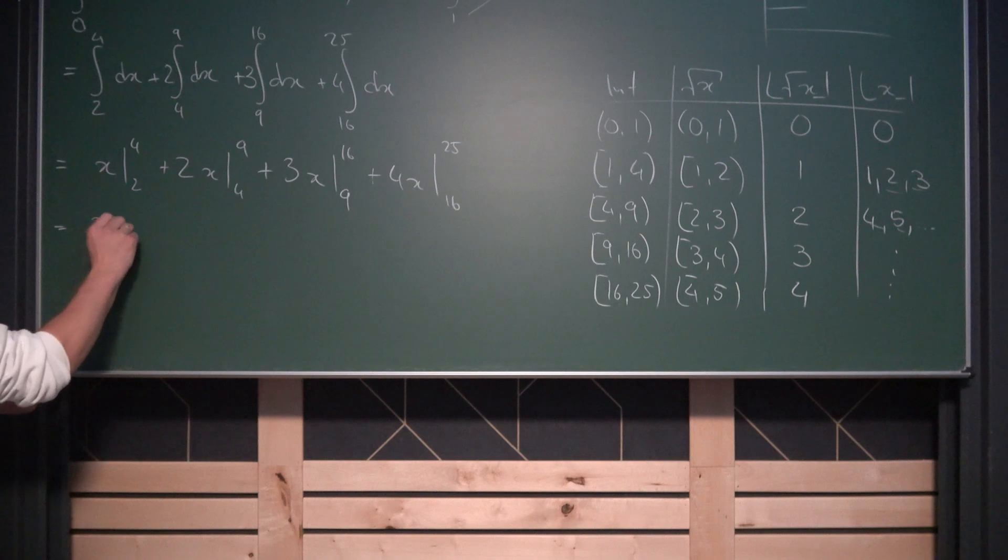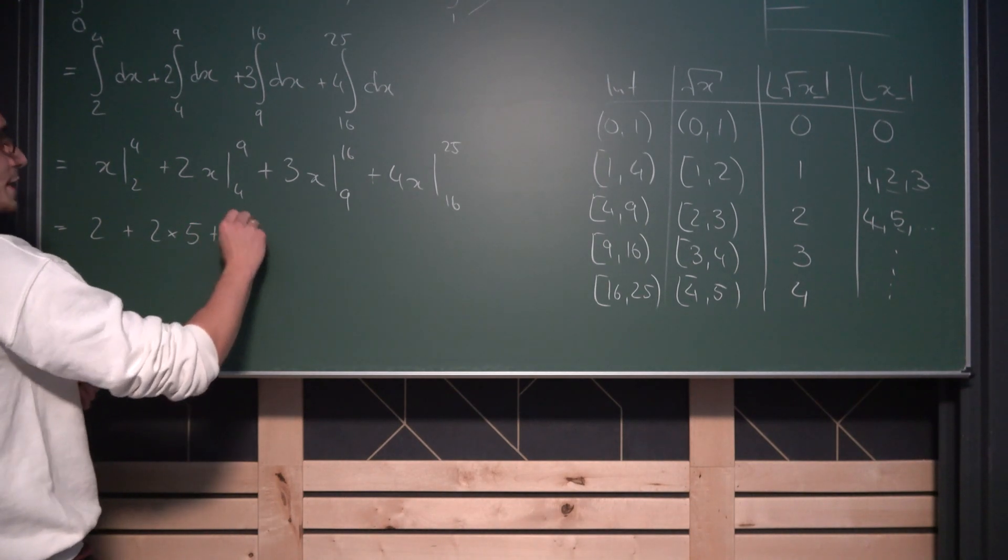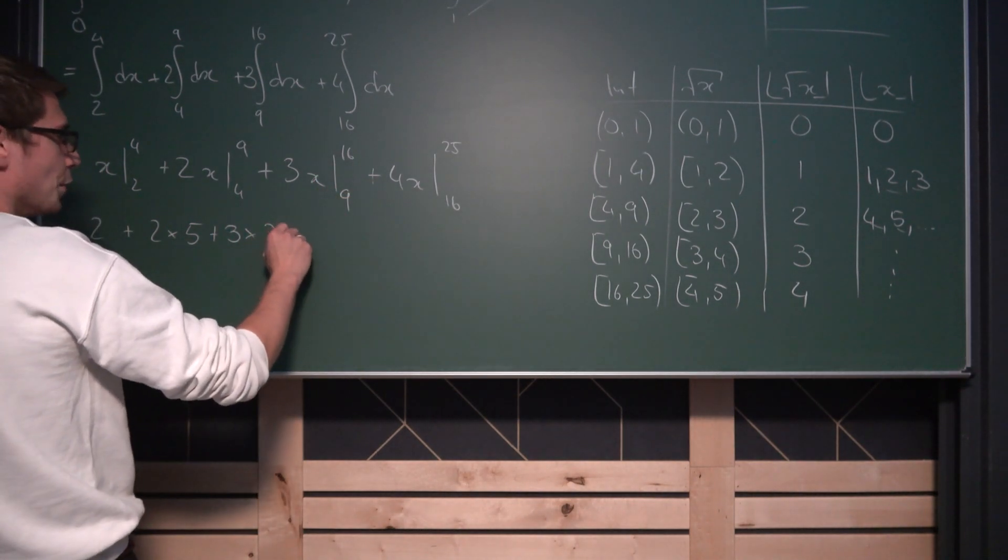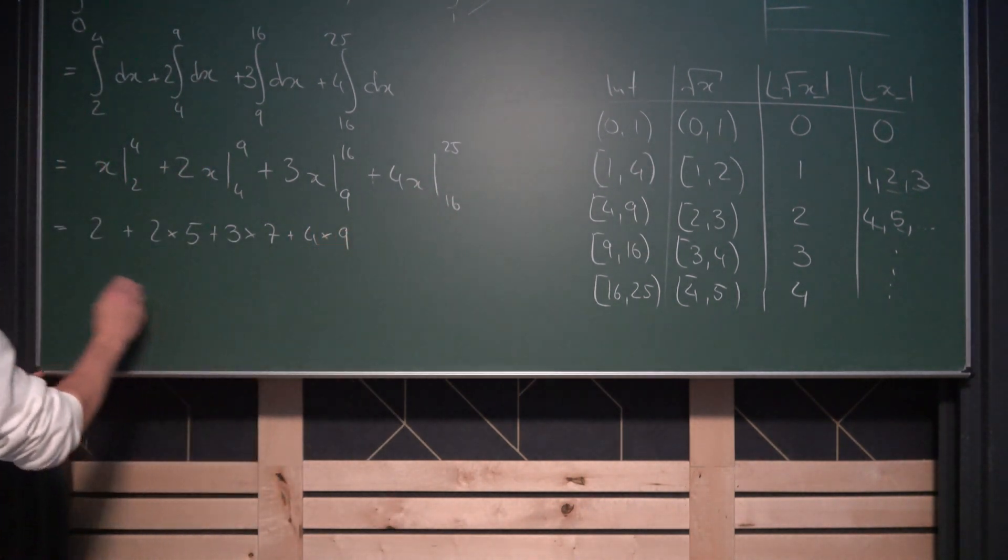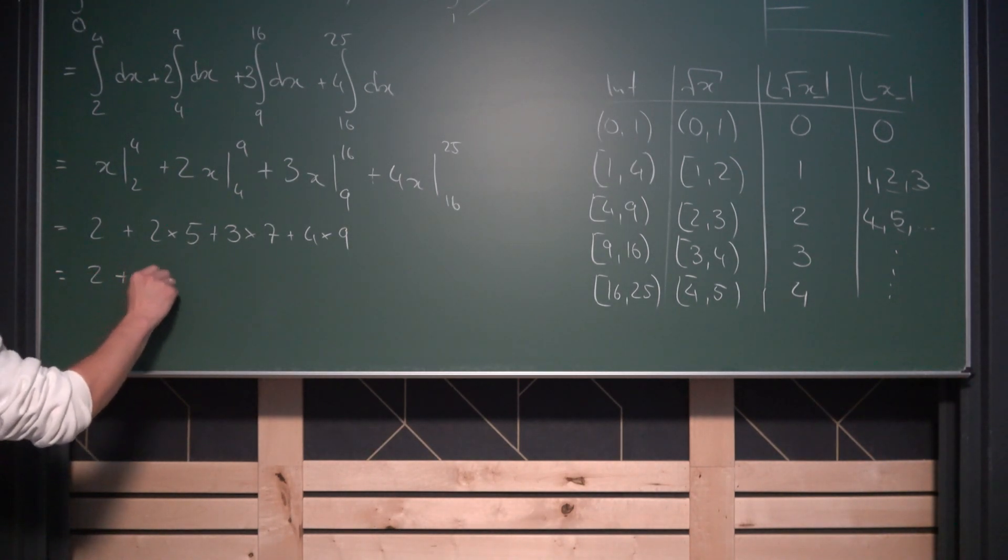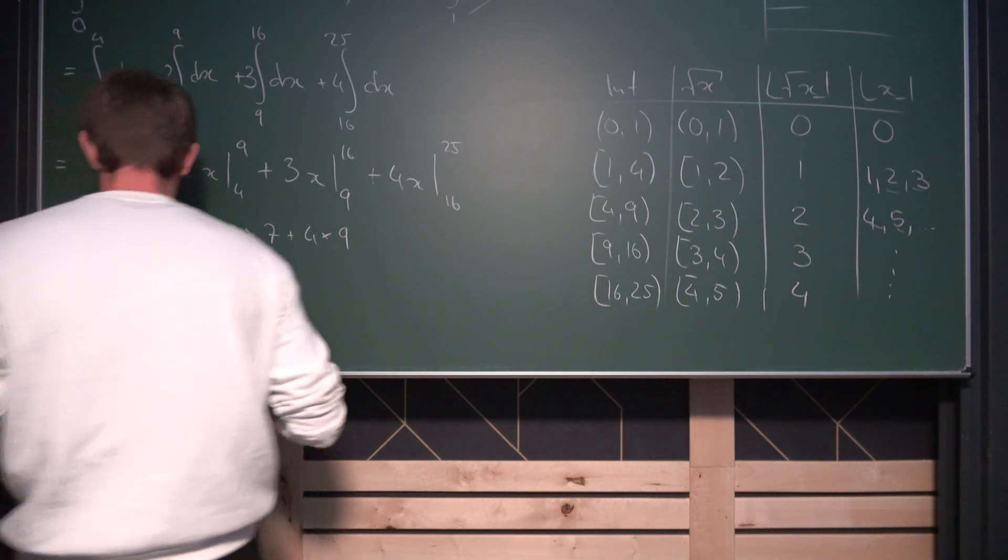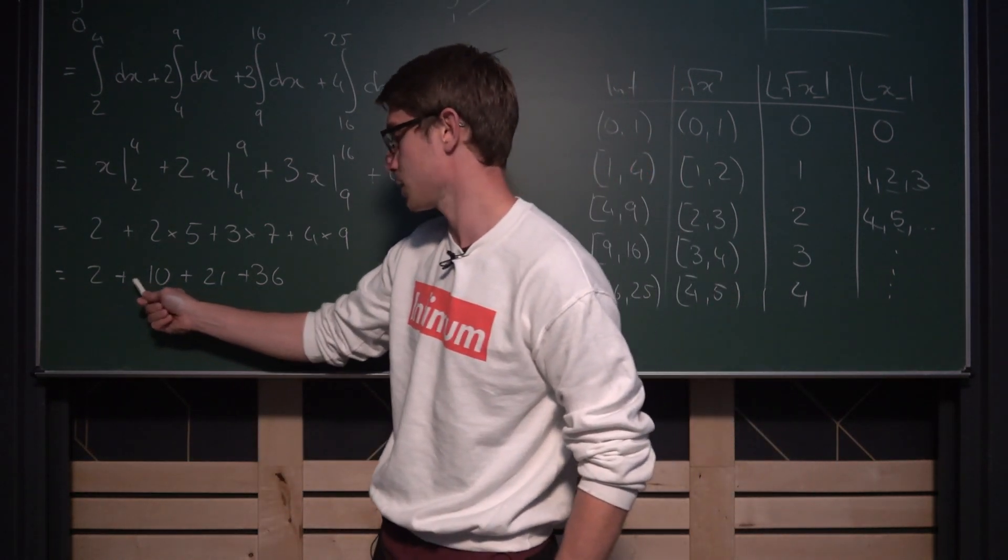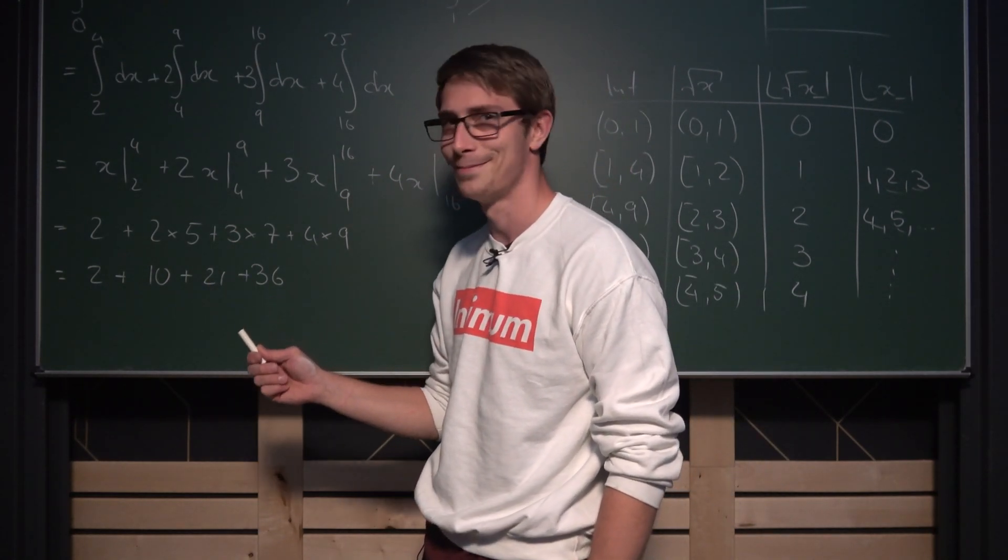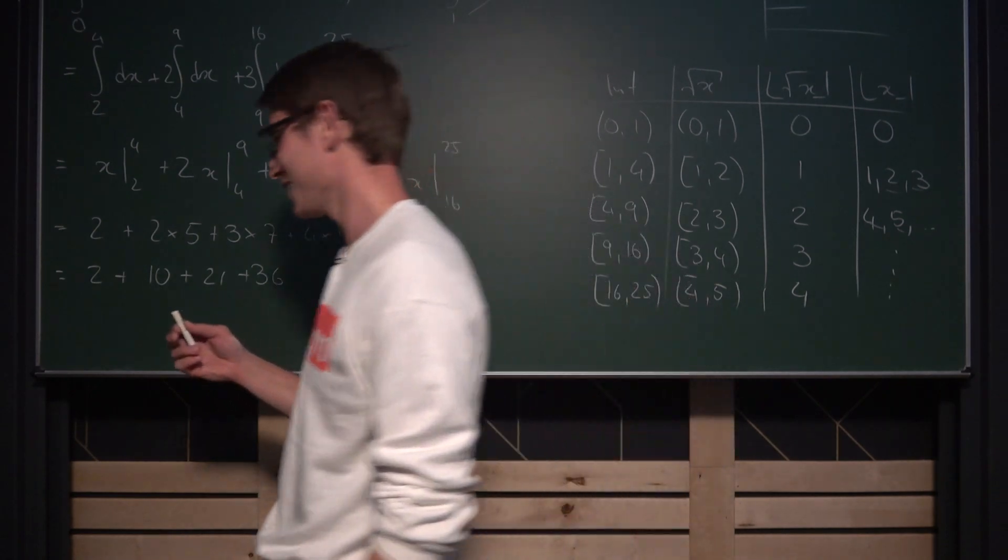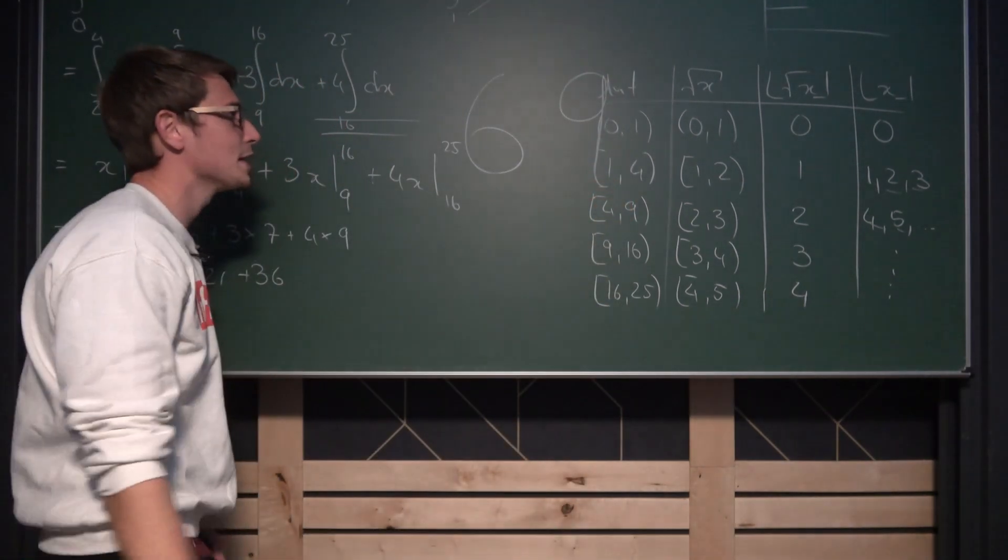So on this first part, what we are going to get is 4 minus 2 is 2, plus 2 times 9 minus 4 is going to be 5, plus 3 times 16 minus 9 is going to be 7, plus 4 times 25 minus 16 is going to give us 9. So let us evaluate everything. So this is 2 plus this is 10, plus 21, and then 4 times 9 is going to be 36. And if we count everything together, we get 10 plus 23, which is 33, plus 36 is going to be... Oh, it's just going to be really damn nice. You know, the answer to our integral is good old 69! Then we are done.